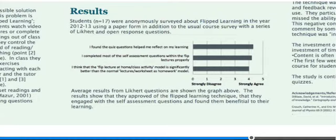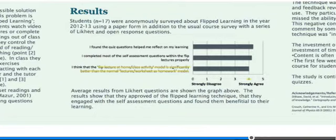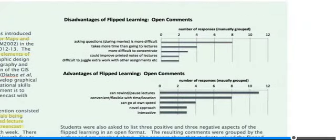So, what were the results? The main Likert question asked students if they agreed with the statement: 'Flip lectures at home / class activity model is significantly better than normal lectures / worksheet at home model.' Students, on average, answered four, showing they tended towards the strongly agree end of the scale — which is very rewarding. I also asked them to give open free comments on the paper feedback, and I grouped these together.